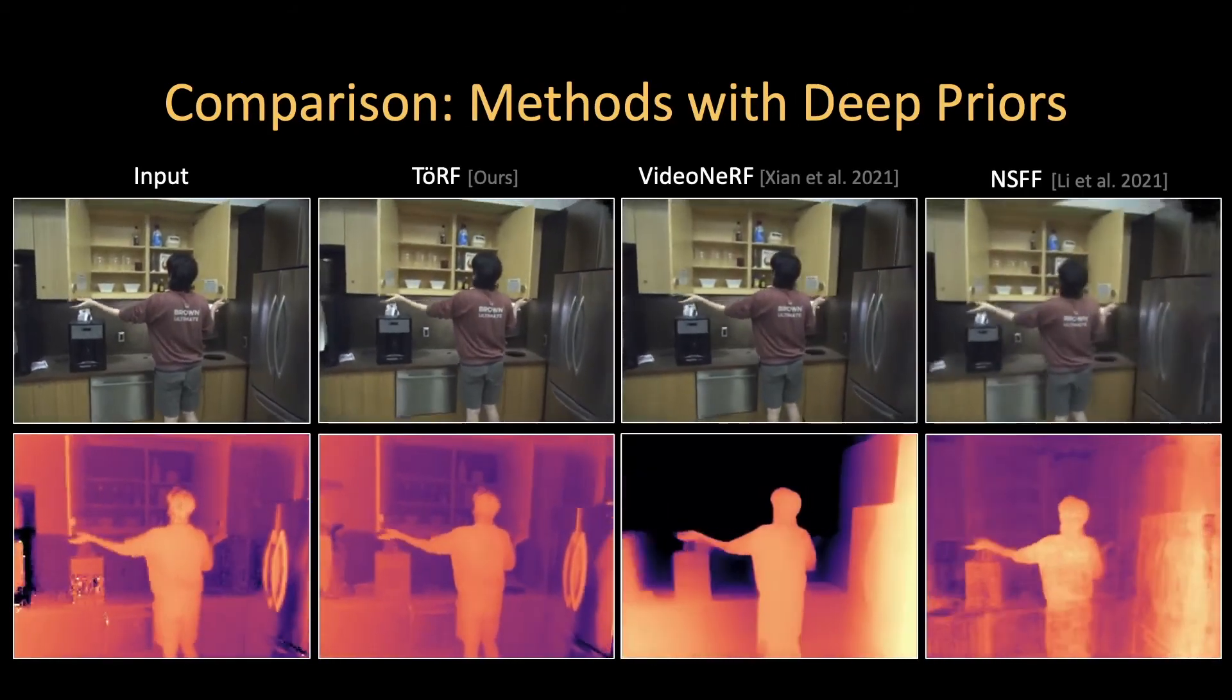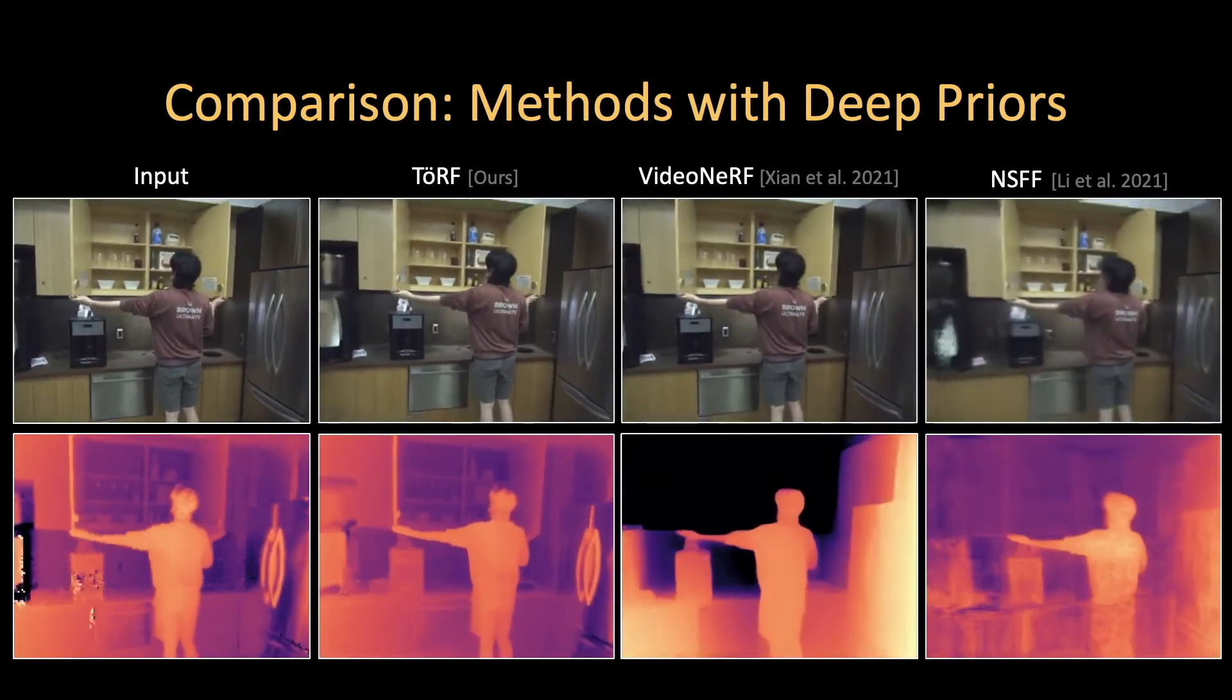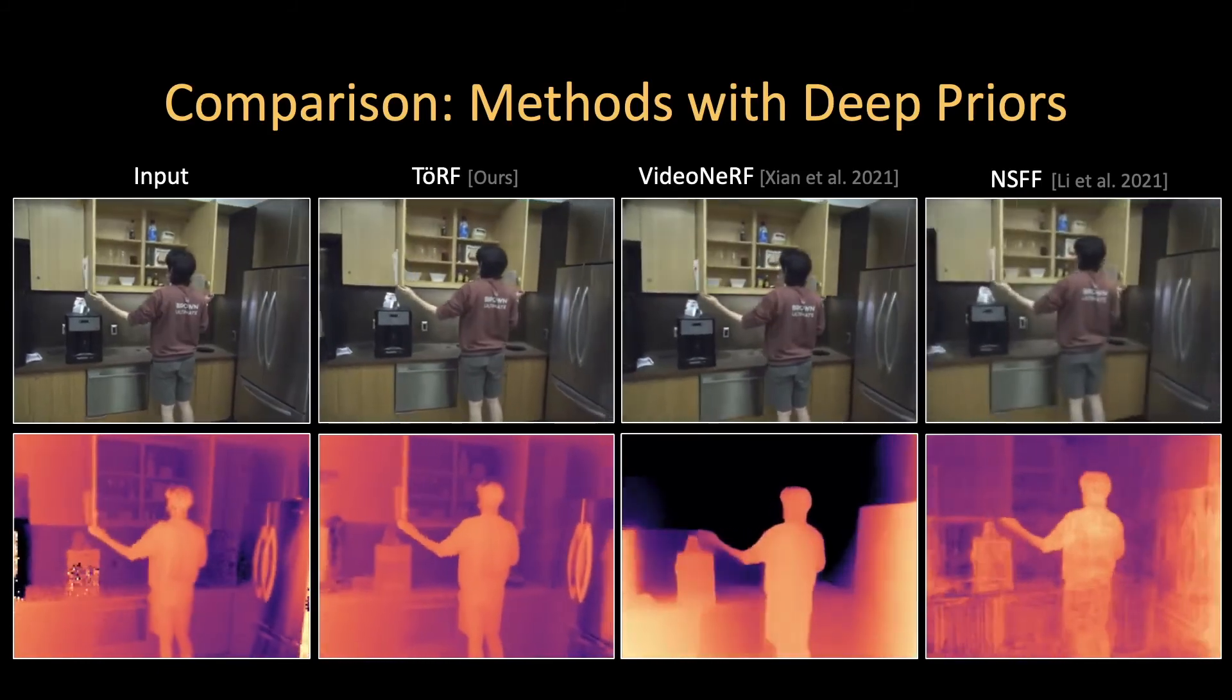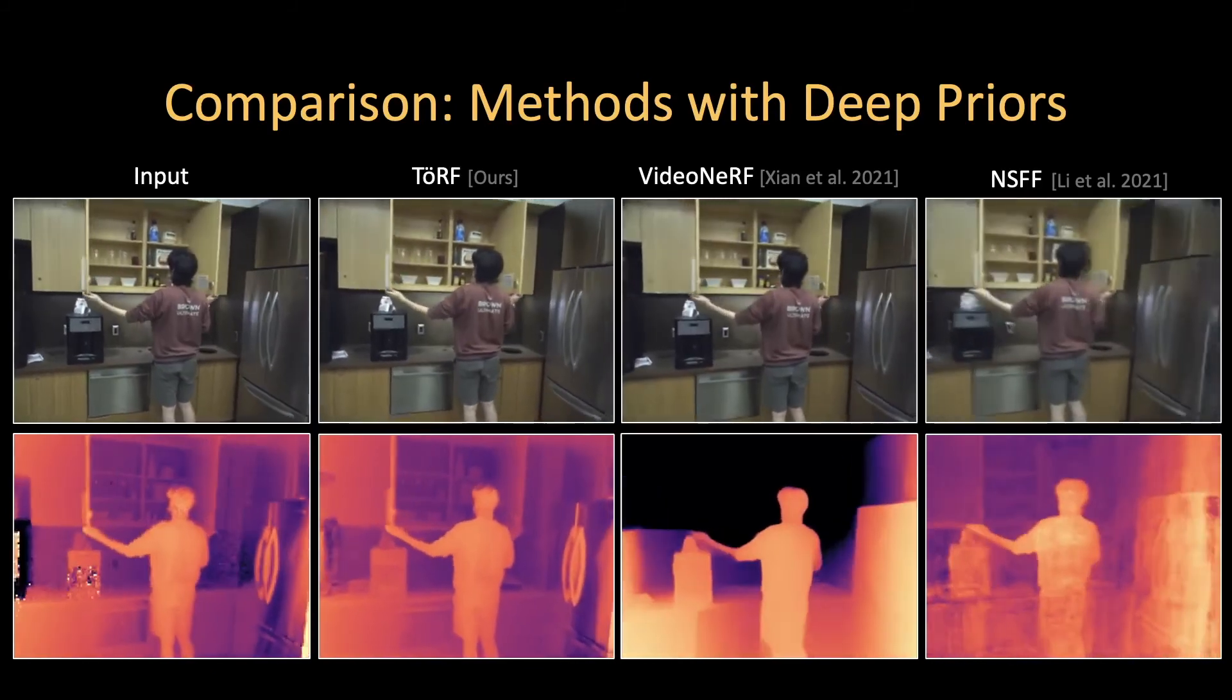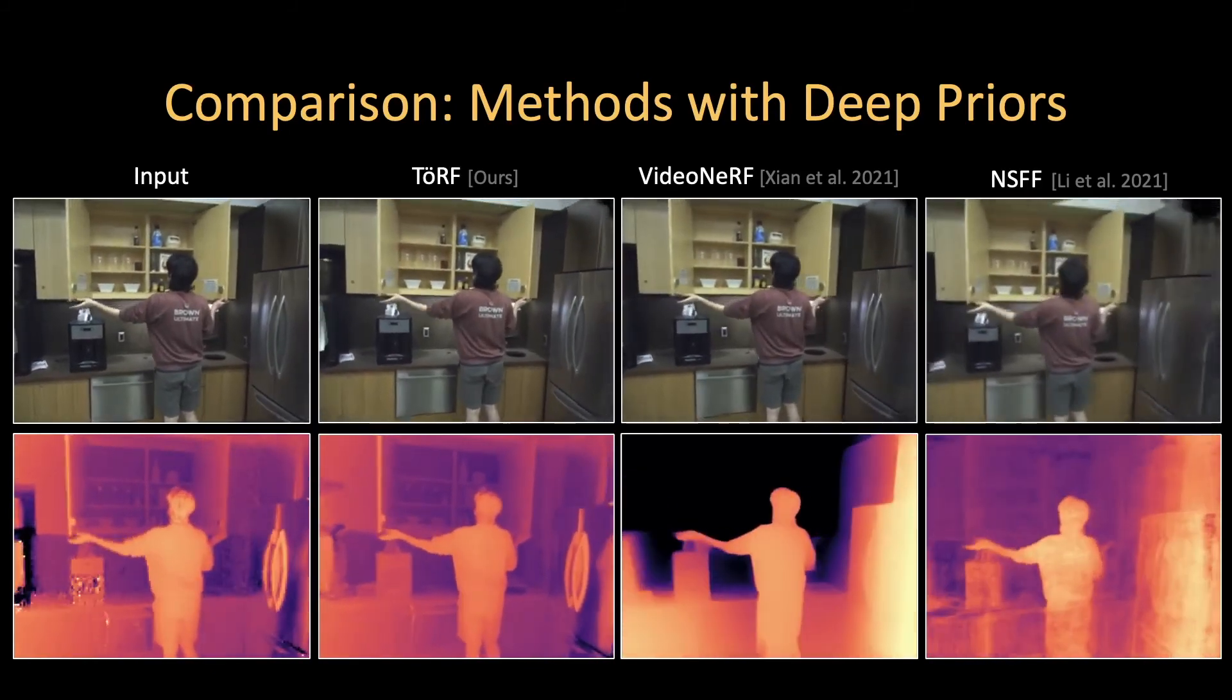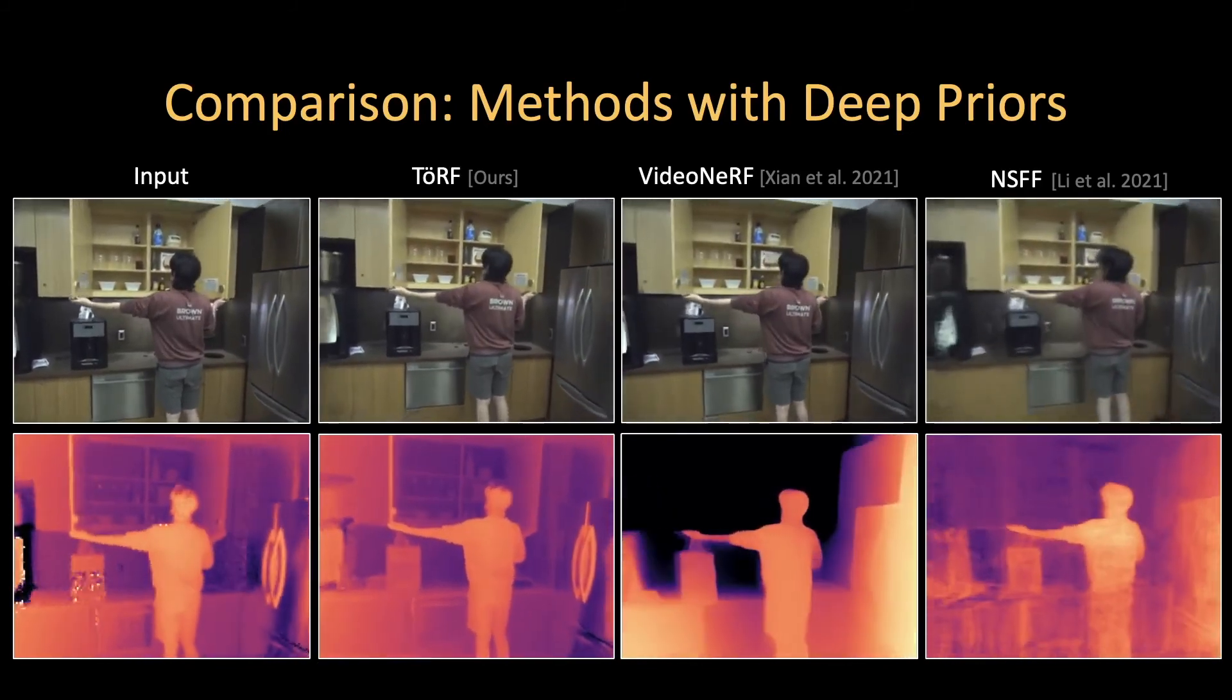Here, we compare TERF to dynamic view synthesis methods that use data-driven deep priors. VideoNerf is a method that uses a depth loss in addition to a color loss for each frame. Neural Scene Flow Fields, or NSFF, uses both depth and flow consistency losses in order to better constrain geometry and motion. TERF significantly improves calibration for our test sequences and produces more plausible view synthesis results.